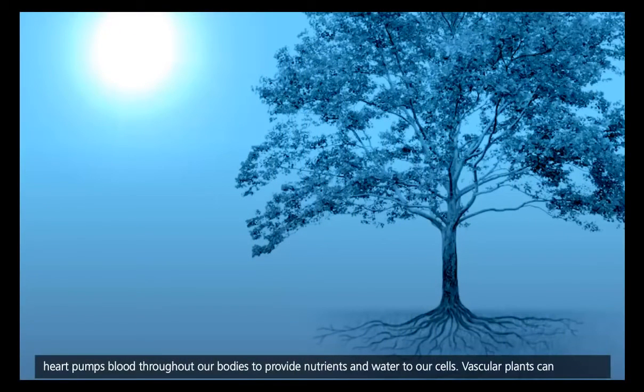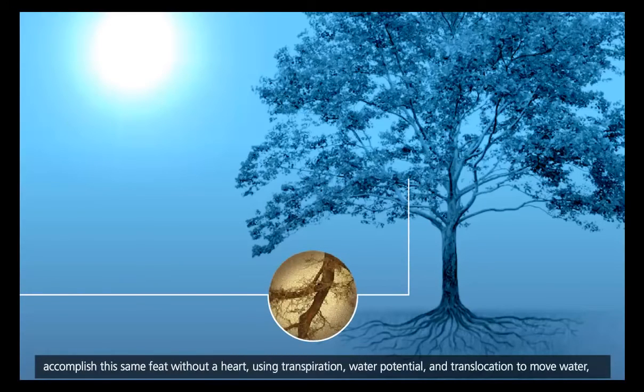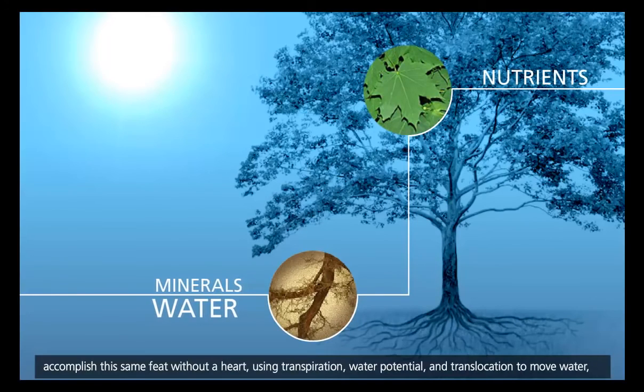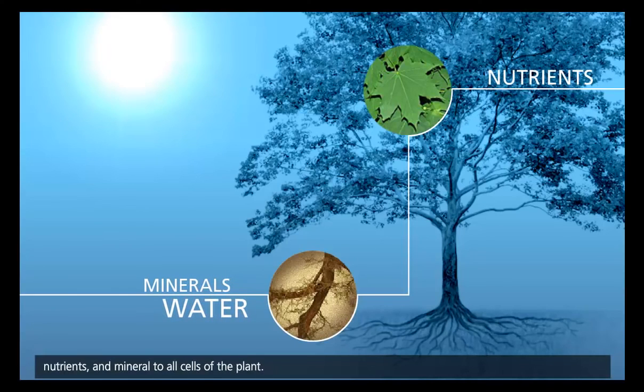Our heart pumps blood throughout our bodies to provide nutrients and water to our cells. Vascular plants can accomplish this same feat without a heart, using transpiration, water potential, and translocation to move water, nutrients, and minerals to all cells of the plant.